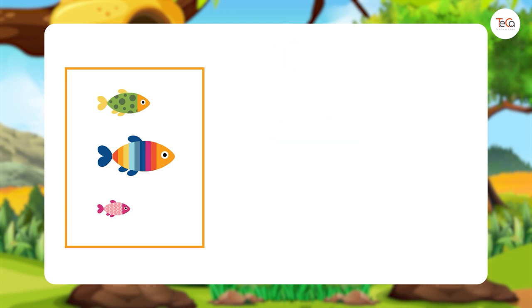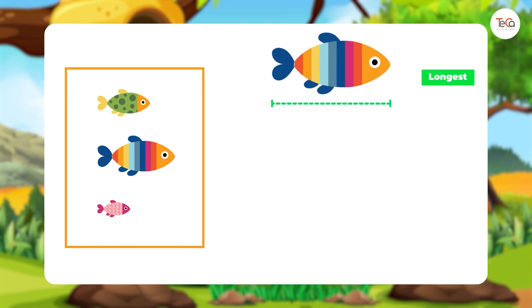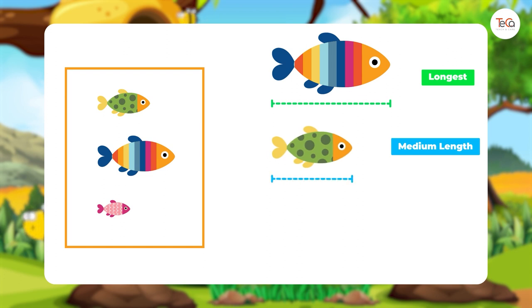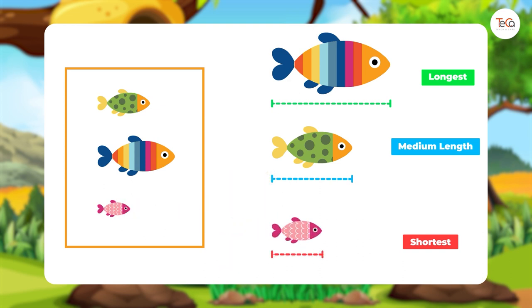Can you help me put these fish in order from longest to shortest? Which fish is the longest? This fish, right? Put it first. Which fish is medium length? This one, right? Put it second. Which fish is the shortest? Did you choose this one? Excellent — put it last.